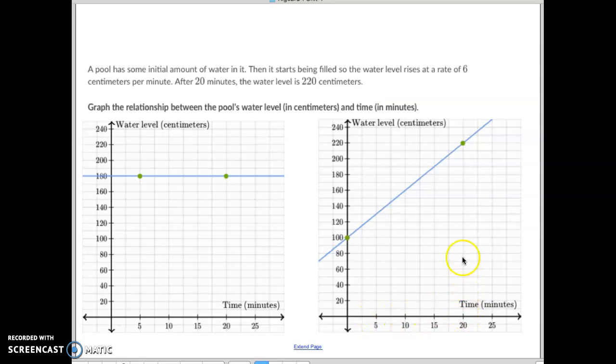So after 20 minutes, we go up to 200 and I graphed 1 dot at 20 minutes, 220. Now, if it's filling at a rate of 6 centimeters per minute, well, that means 20 minutes times 6 centimeters per minute would be 120 centimeters. That means after 20 minutes, it had filled 120.